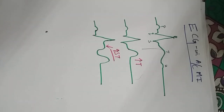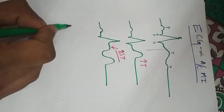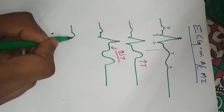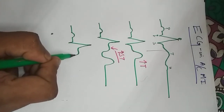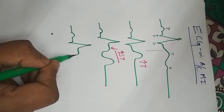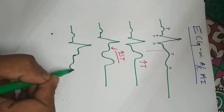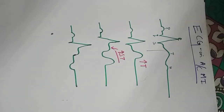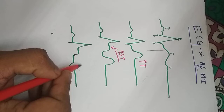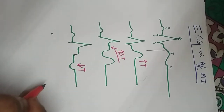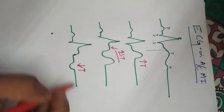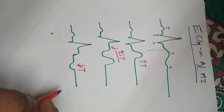The third change is T wave depression, also called inversion of the T wave. This takes place around 8 to 12 hours after acute myocardial infarction.